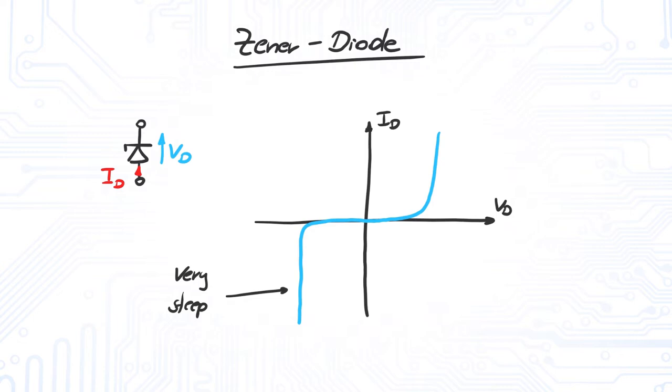Once the reverse voltage exceeds the Zener voltage Vz, current can flow through the diode in reverse direction. And due to the steep incline, the voltage does not move far from Vz.